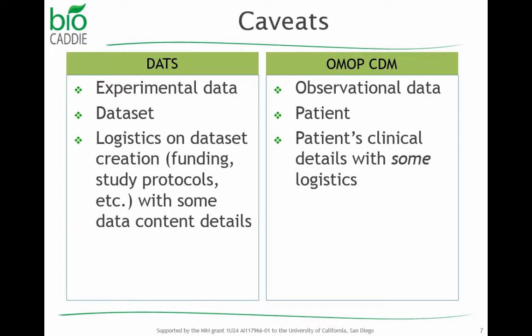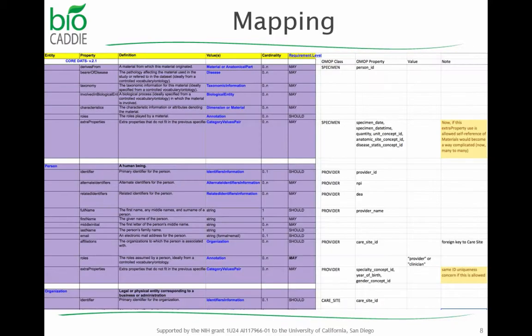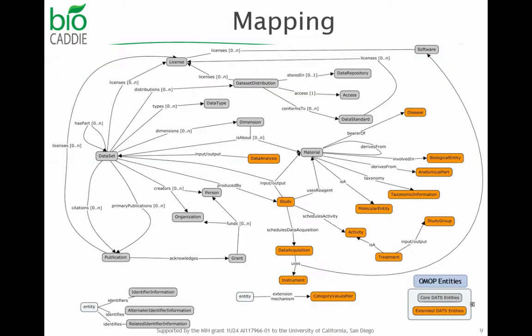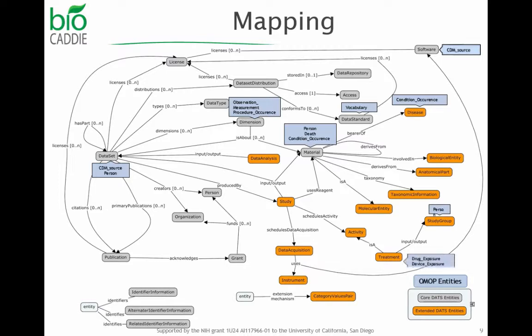However, OMAP CDM tries to represent the critical details about the patient, not much about the logistics. So we conducted the classic item-to-item mapping first and then figured out which data items can contain related OMAP CDM information.